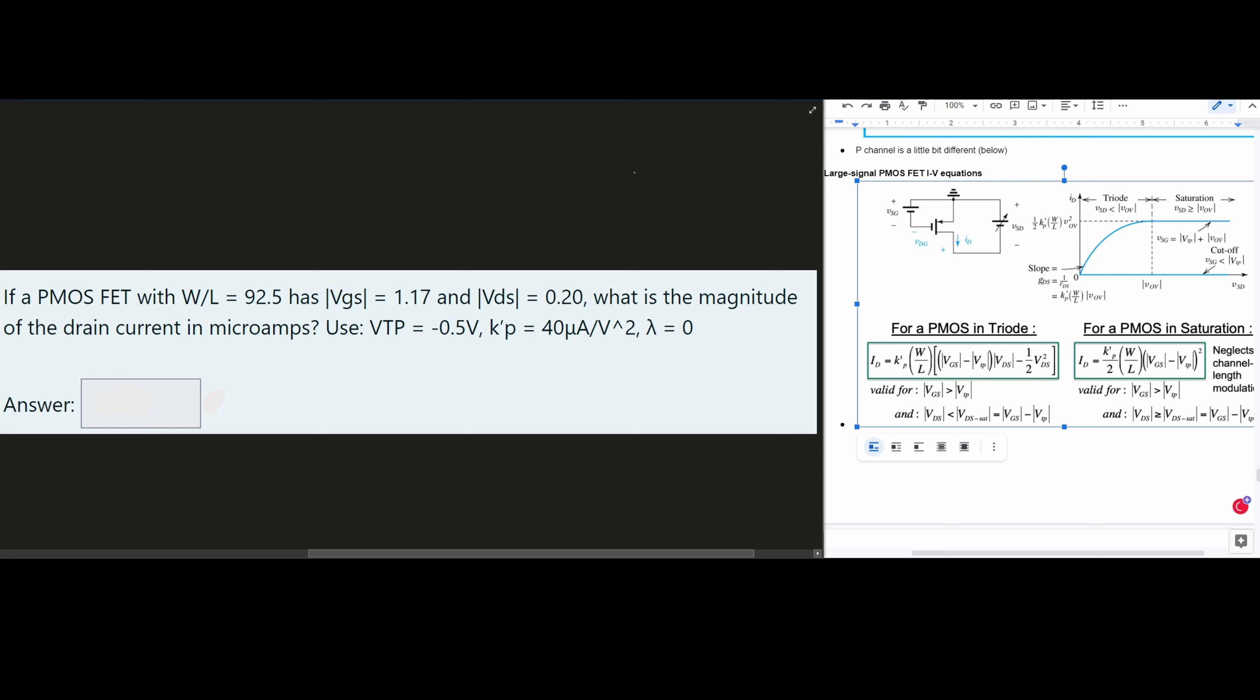We're asked if a PMOS FET with W over L has this value and a VGS and VDS value, what is the magnitude of the drain current in microamps? So what we're trying to find here is our drain current. That's going to be our ID, and we have an equation for that.